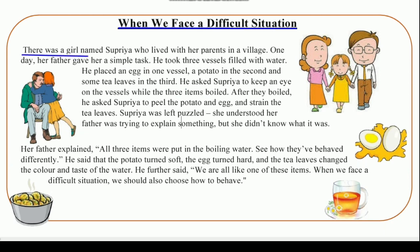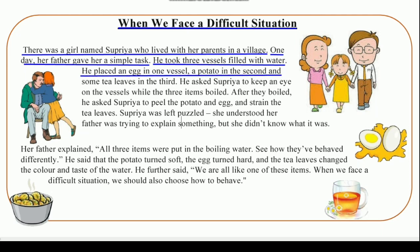There was a girl named Supriya who lived with her parents in a village. One day, her father gave her a simple task. He took three vessels filled with water. He placed an egg in one vessel, a potato in the second, and some tea leaves in the third. He asked Supriya to keep an eye on the vessels while the three items boiled.